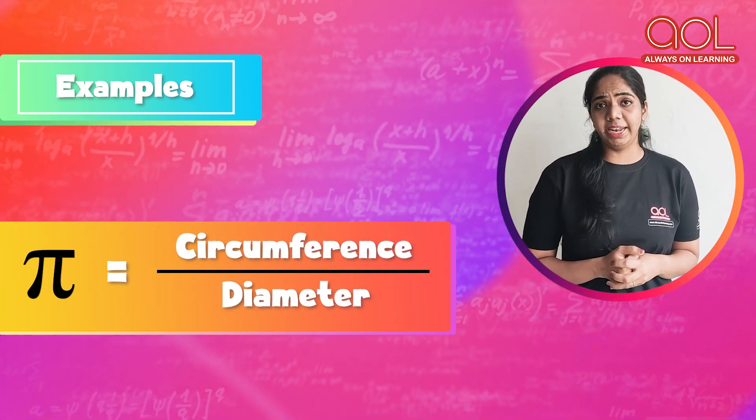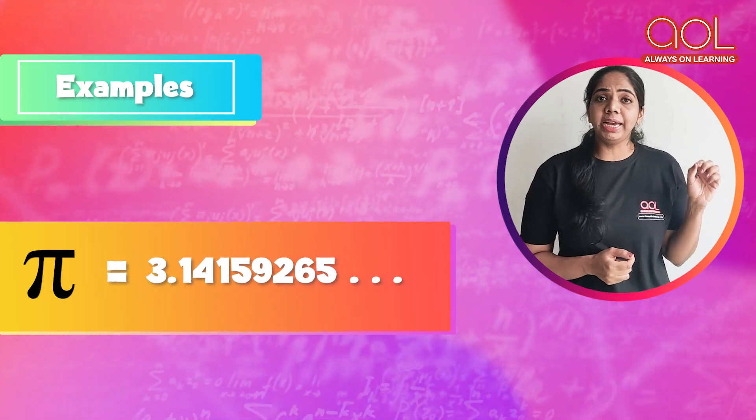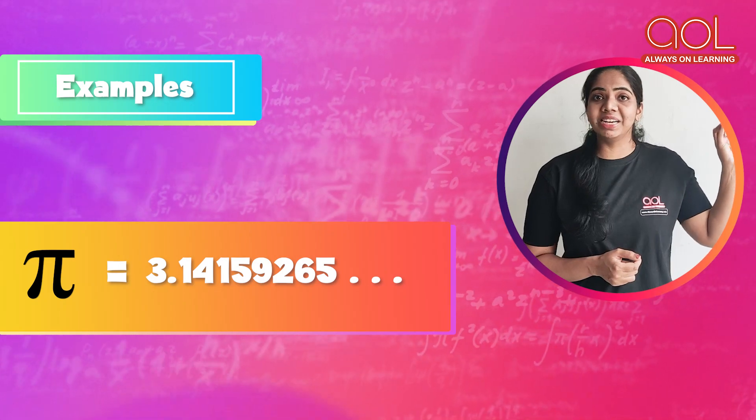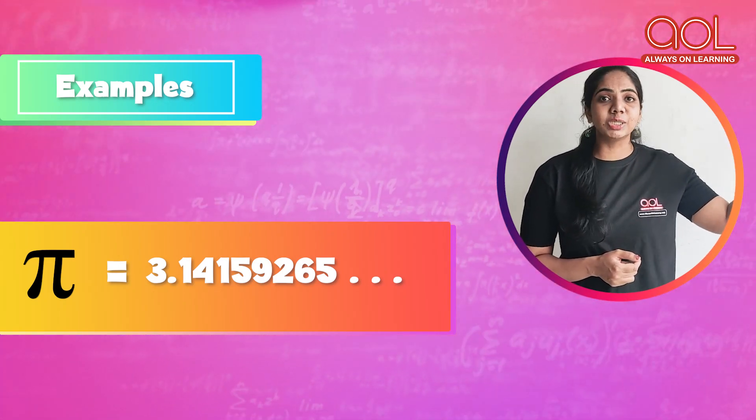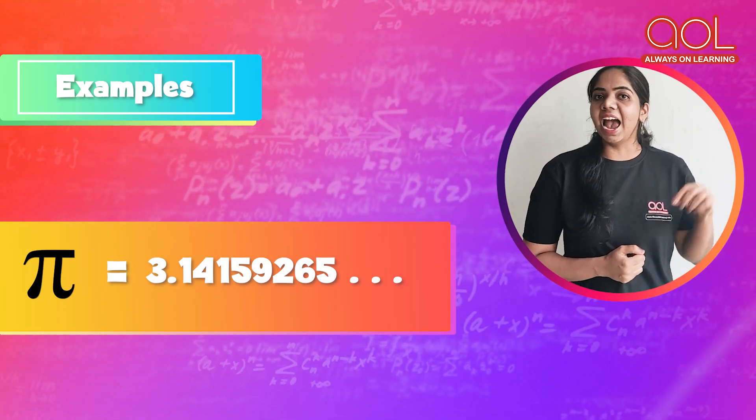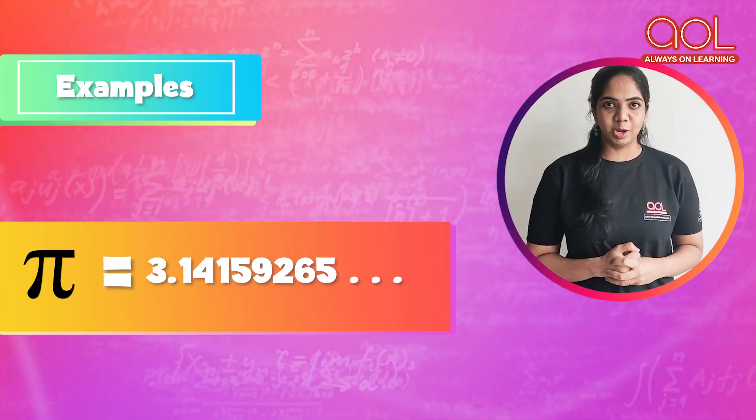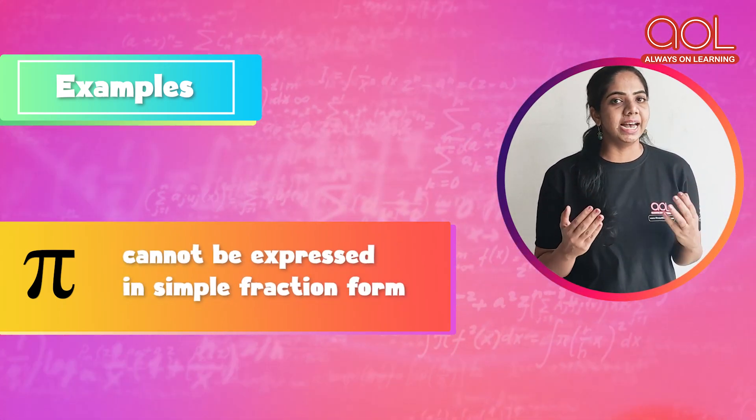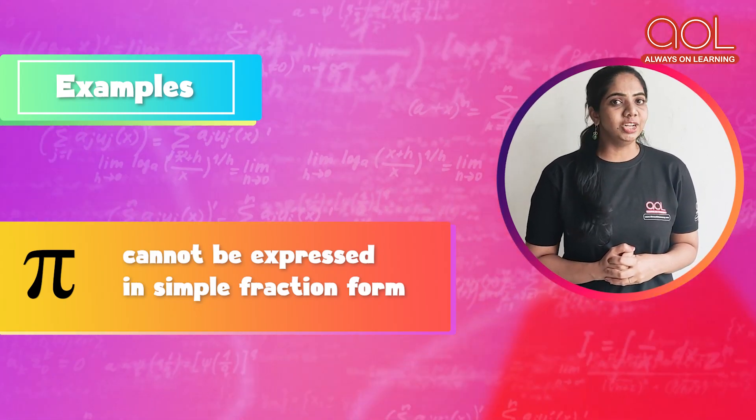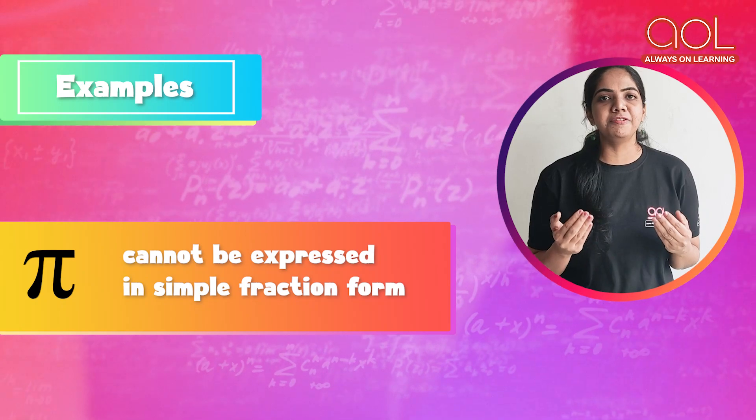We know the value of pi as 3.14159265 and so on. It is non-terminating and it is non-recurring. This is an example for an irrational number. It cannot be expressed in a simple fraction form.